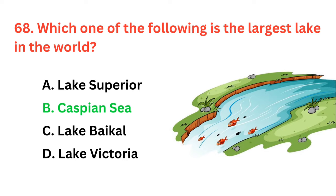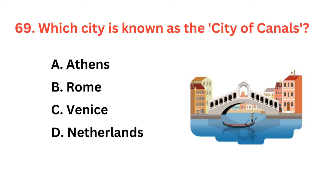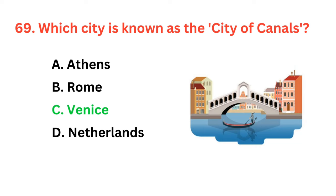Which city is known as the City of Canals? The correct answer is option C: Venice.